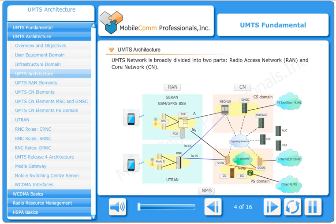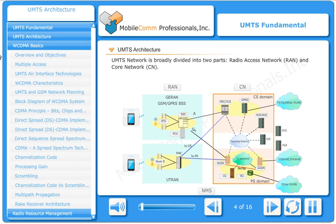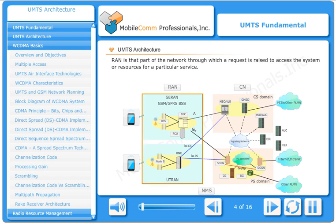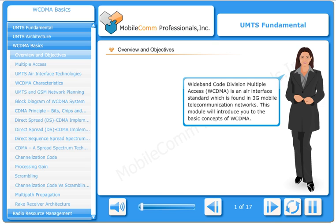The UMTS network is broadly divided into two parts: Radio Access Network, RAN, and Core Network, CN. RAN is that part of the network that uses Wideband Code Division Multiple Access, WCDMA.